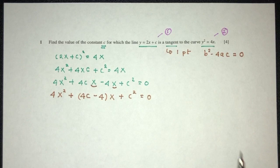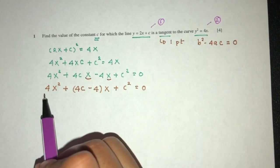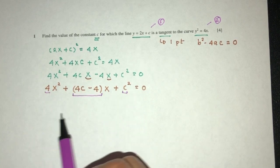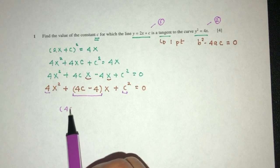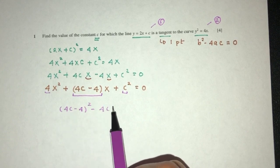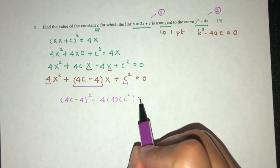As we know, we can just have the values for b squared minus 4ac. This will be a, this will be b, and that will be c. So b squared is 4c minus 4 squared minus 4 times a times c, c is c squared, equal to 0.